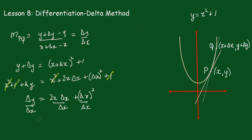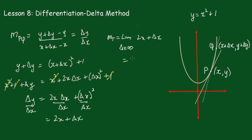Now we divide through by Δx, and we get Δy/Δx = 2x + Δx. The gradient of the tangent will be equal to the limit as Δx approaches 0 — so as P moves towards Q in this direction — of 2x + Δx, and that equals 2x.